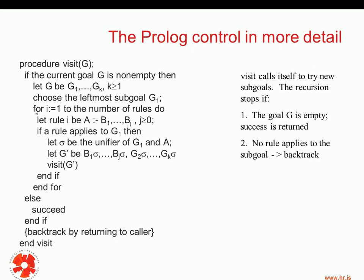We're basically going through all the rules of the database. The format of the rule is such that A is the left-hand side of the rule and B1 up to BJ is the right-hand side. If a rule applies to G1 — if we can apply some rule in the database to G1, where G1 is the leftmost sub-goal — then we have to find the unifier of G1 and A. Unification is at the heart of the Prolog algorithm when we try to unify two terms; in this case we're unifying G1 and A.